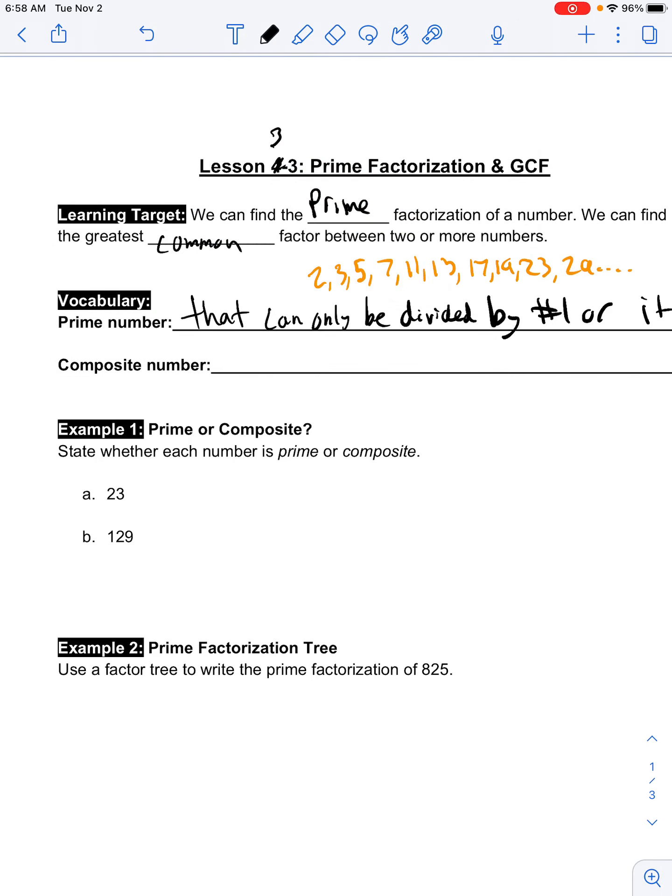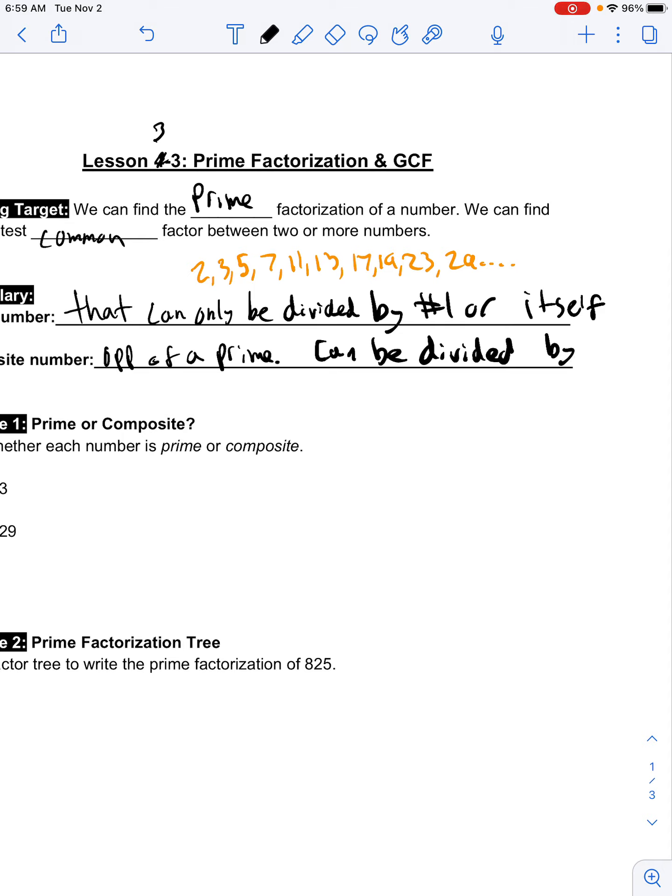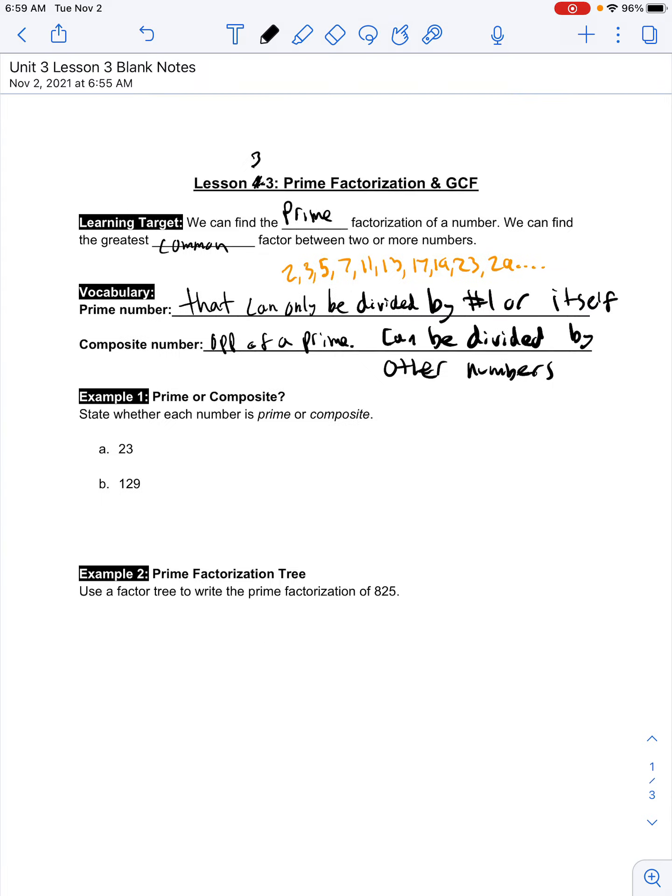And then a composite number is like the opposite of a prime number. So, it's a number that can be divided by more. It can be divided by 2, by 5, by 10. It can be divided by more than just the number one or itself. So, I'm going to say opposite of a prime can be divided by other numbers, not just number one or itself.